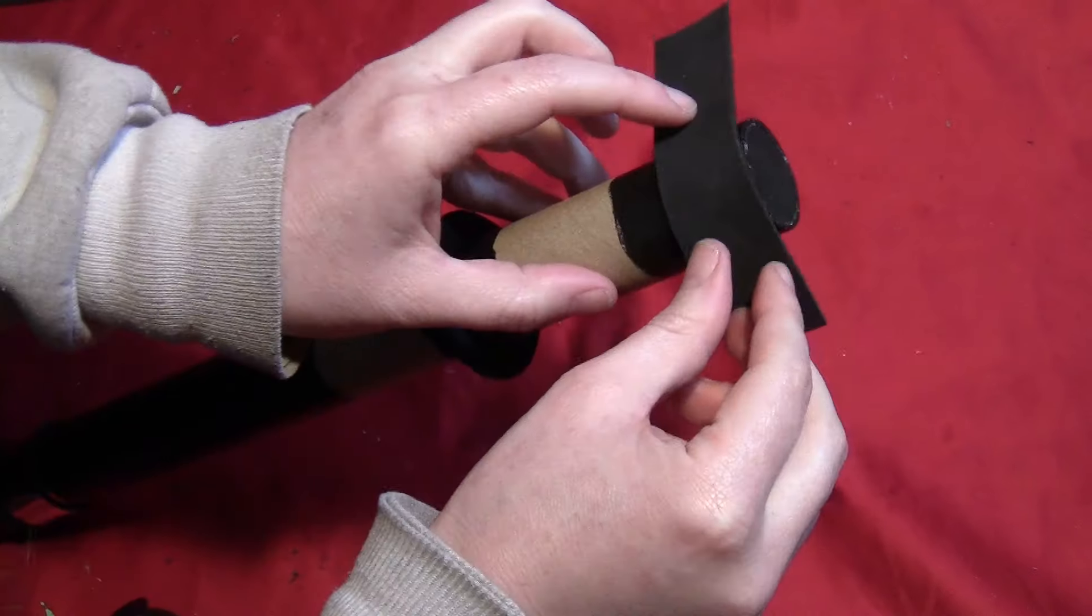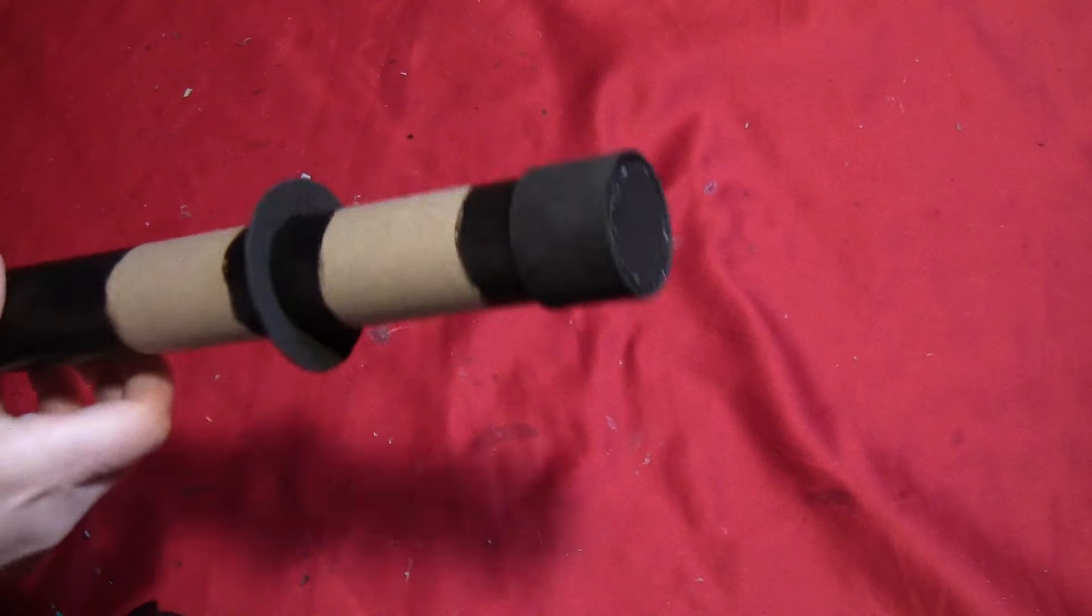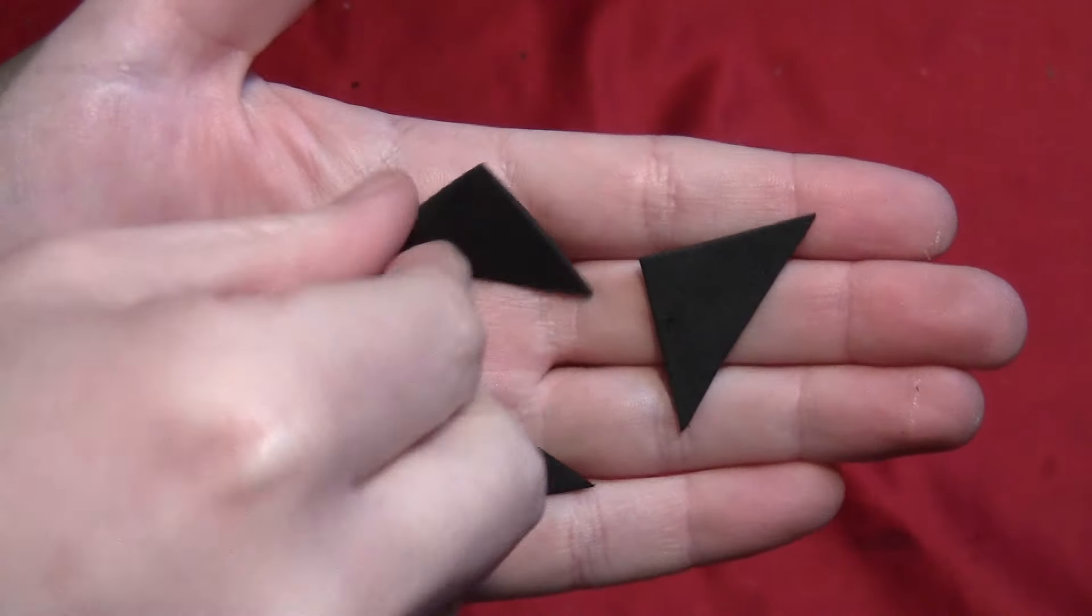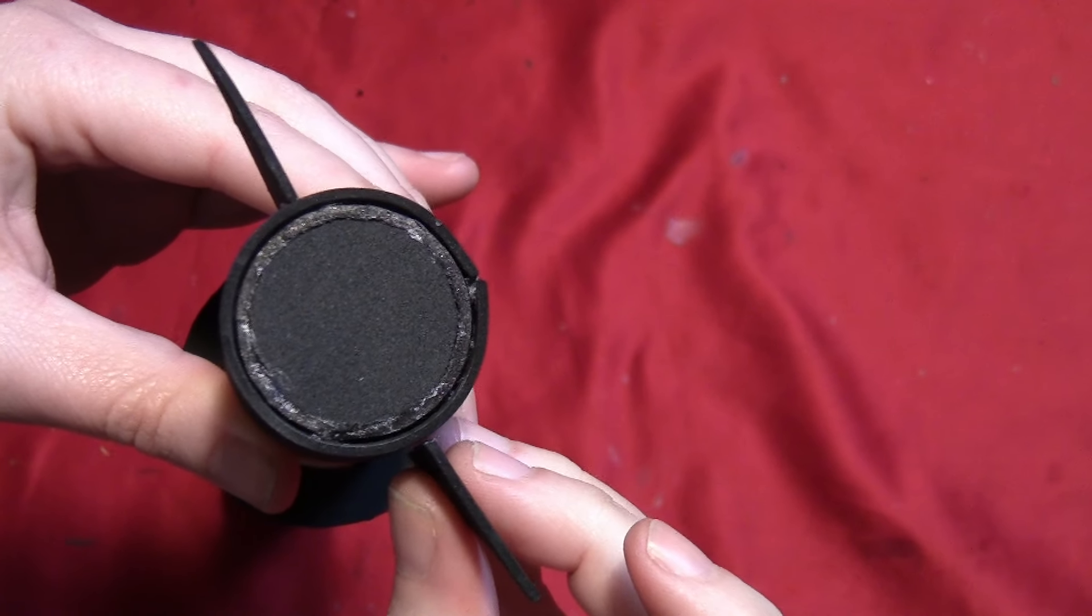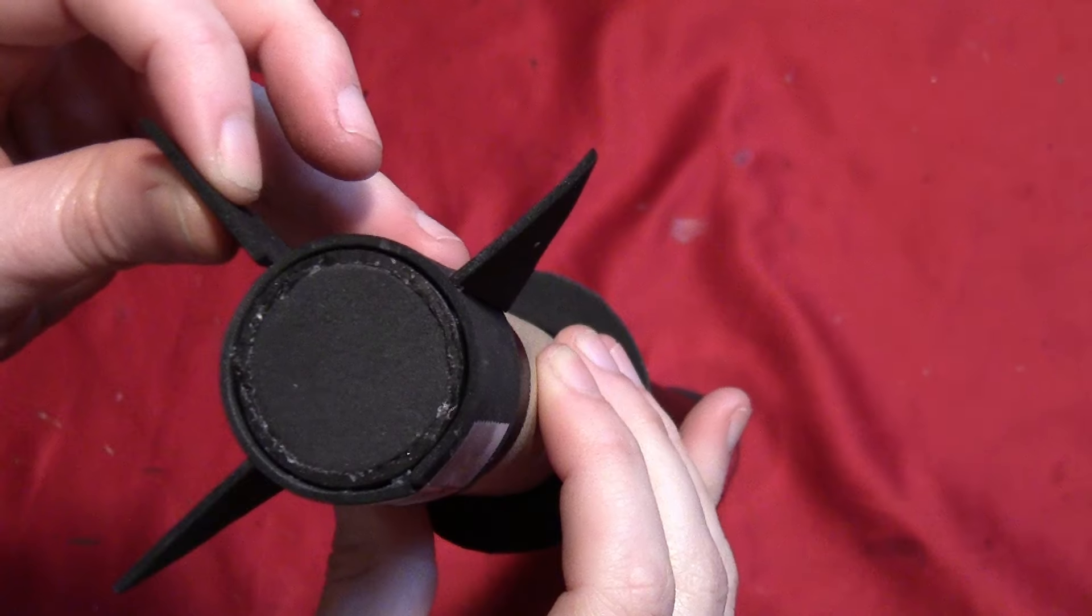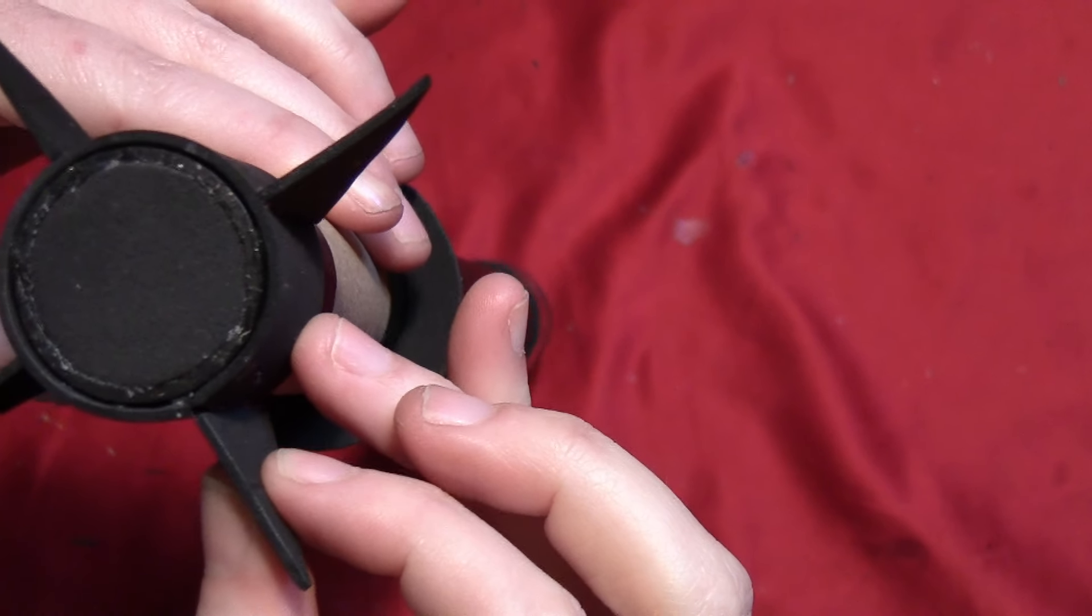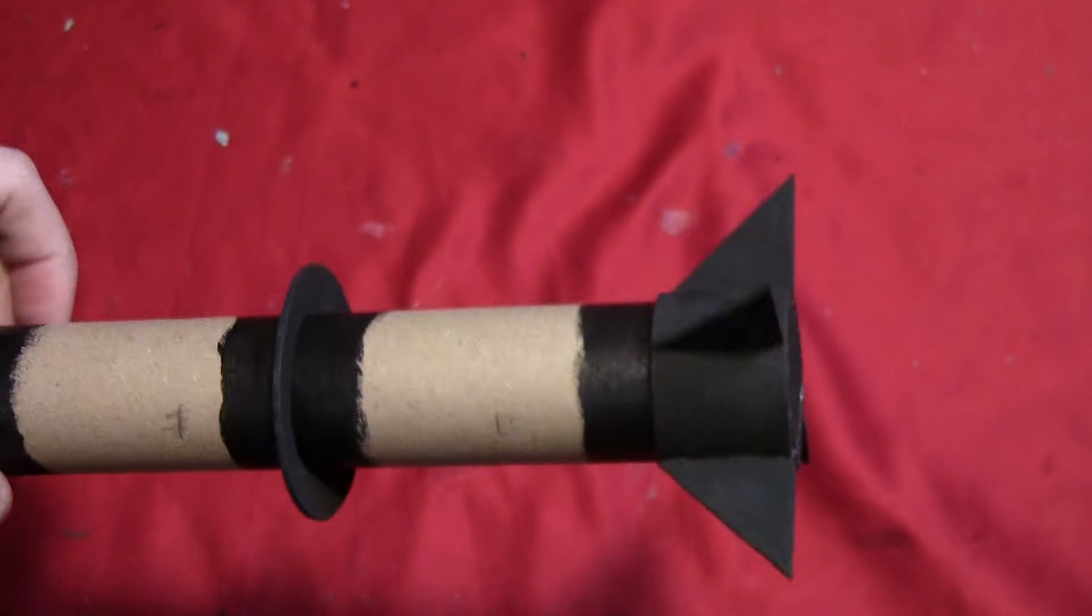Take a rectangle of black foam and just fold that around the very end of the tube. Cut four triangles of foam and glue them on so that the flat edges are at the top, gluing all four of them on right across from each other. Just like that.